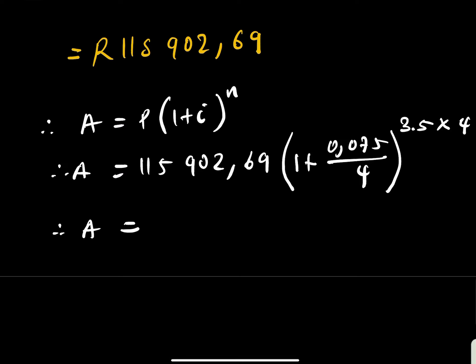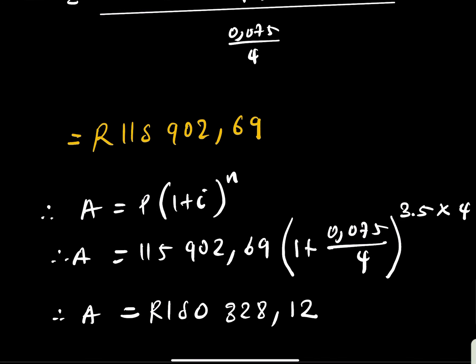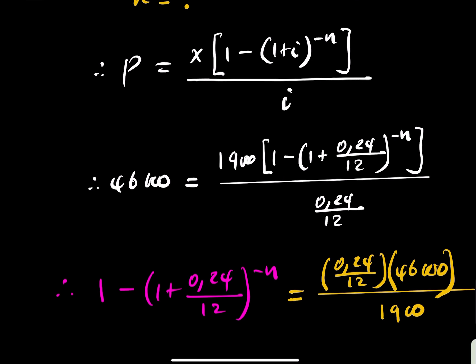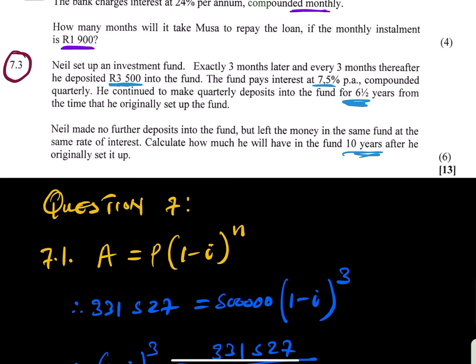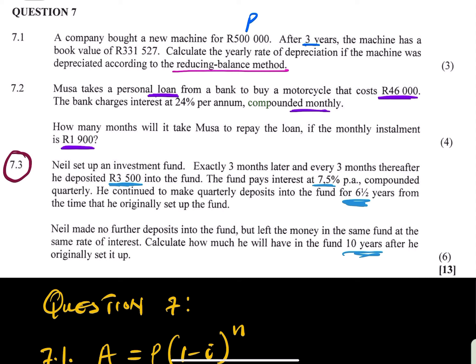Type it into the calculator and you should get approximately R150,000 and something. This is how you work out this problem. Thank you very much for watching — it's a very manageable paper. This was from the 2017 exam. See you next time.